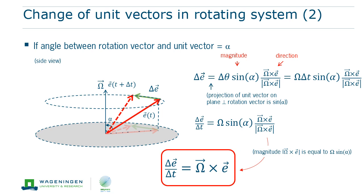The fact that the cross product is involved makes sense. The change in the unit vector is maximum when the rotation vector is perpendicular to the unit vector. On the other hand, when both are parallel — for instance, a vertical unit vector on the north pole — the rotation does not have an effect on the direction of the unit vector at all. After this intermezzo, it's time to go back to further understand the relation between motion in an inertial reference system and a rotated reference frame.